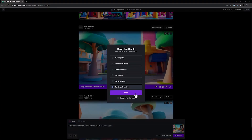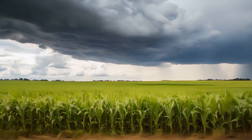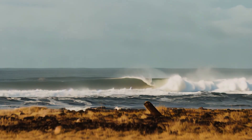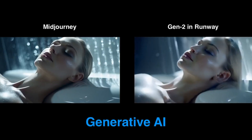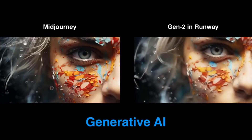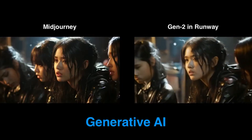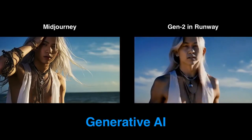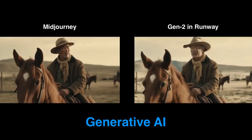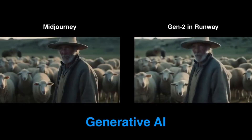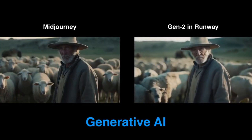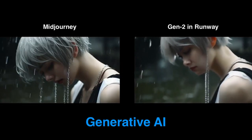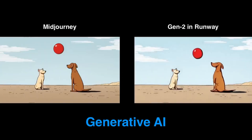Gen 2 is a testament to their dedication to pushing the boundaries of AI and machine learning, ensuring that the future of creativity is in good hands. So there you have it, my fellow creators. Gen 2 by Runway is a game-changer in the world of video generation — from turning text into cinematic wonders to infusing images with life and style. Gen 2 is the next frontier in our creative journey. Dive into its modes, unleash your imagination, and let the AI magic take your videos to a whole new level.